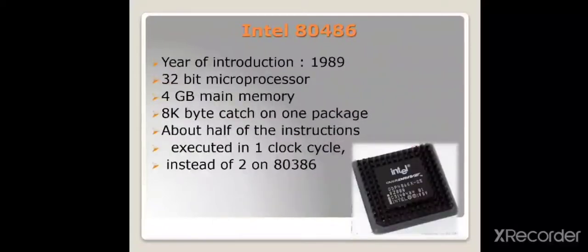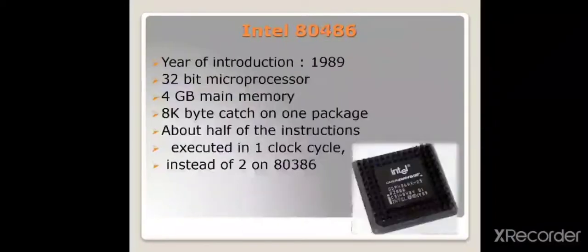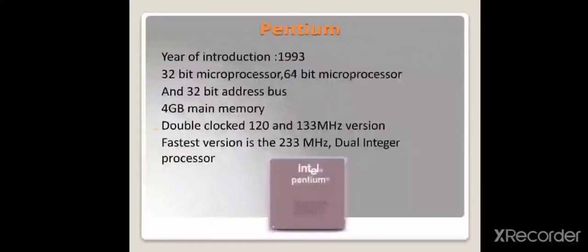In 1989, the 80486 was introduced. It was a 32-bit microprocessor with 4 GB main memory size, same as the 80386. Half of an instruction could execute in one clock cycle.